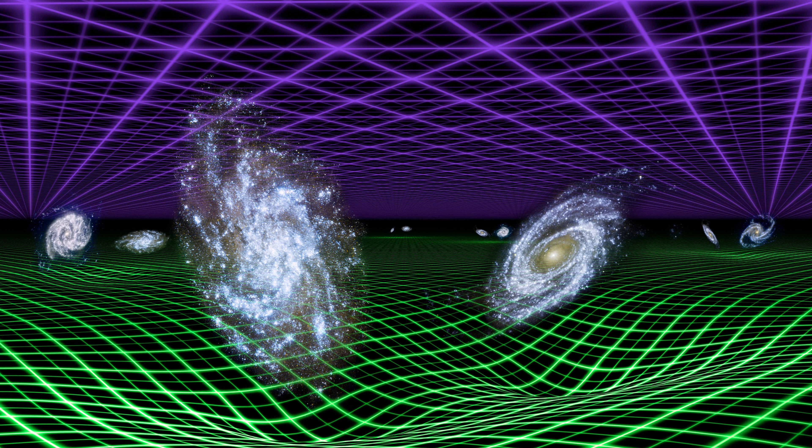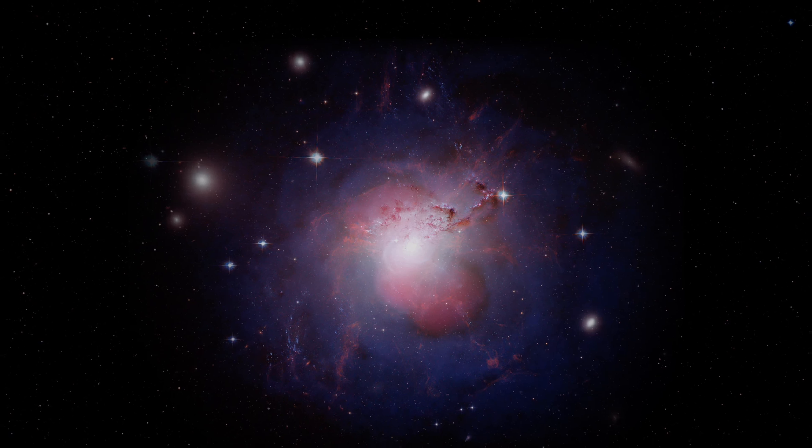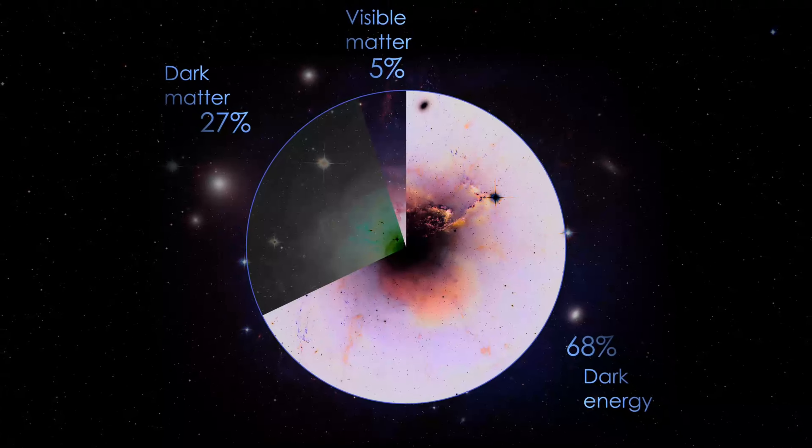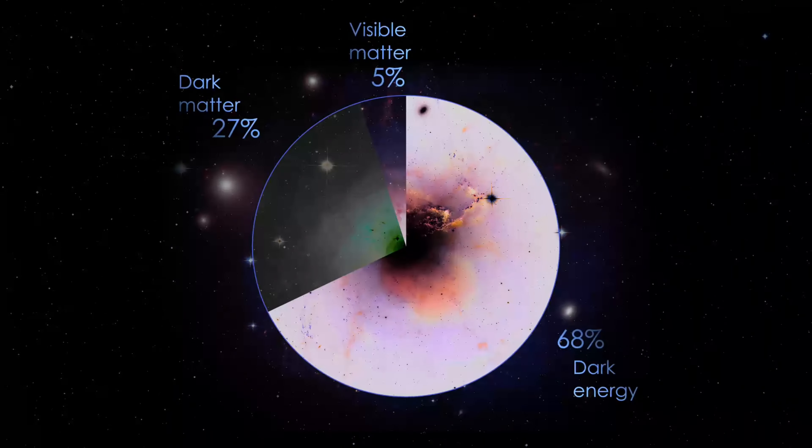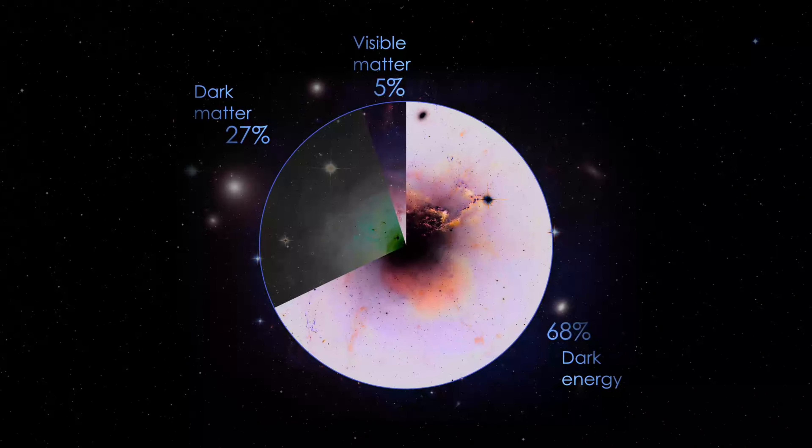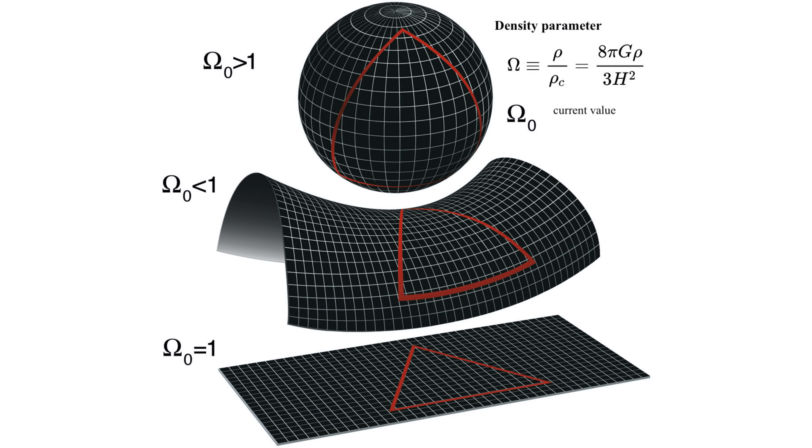Conversely, if there is too little matter and energy, space-time will curve outward, resulting in an open space like a saddle shape. The critical point lies in achieving a perfectly flat universe where space-time isn't curved in any direction. To achieve this, the density of matter and energy must be finely balanced to a specific critical value.